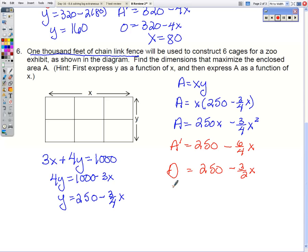I'm going to move the 3 halves over. Now we can multiply both sides by 2 thirds so that these cancel. So x is 500 over 3.